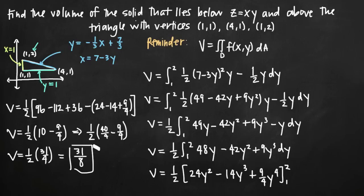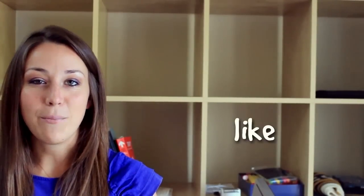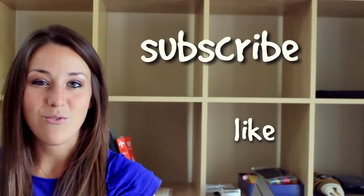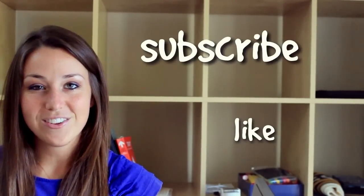That's the final answer — the volume of the solid that lies below the plane z equals xy and above the triangle we drew is 31 over 8. I hope you found that video helpful. If you did, like this video below and subscribe to be notified of future videos.